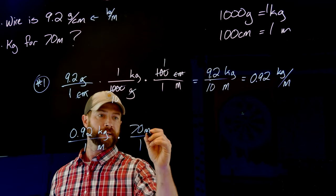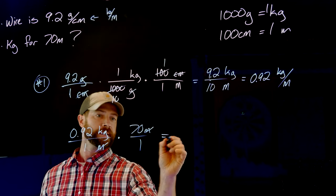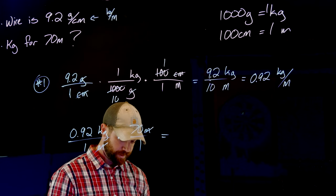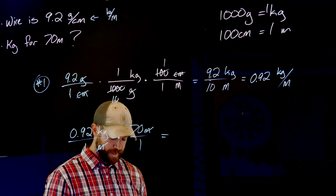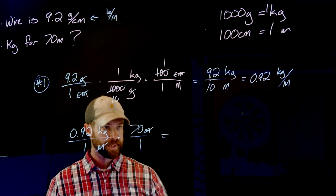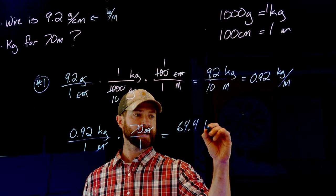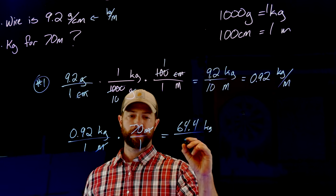And in the end, my meters cancel out here. 0.92 times 70 equals 64.4. And kilograms is my units over just one, so just say 64.4 kilograms is the weight of this wire.